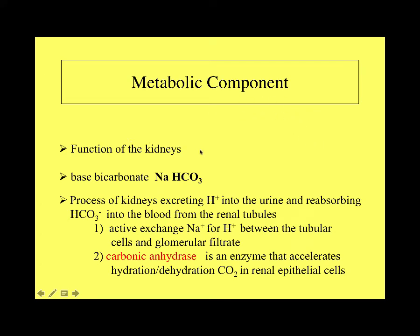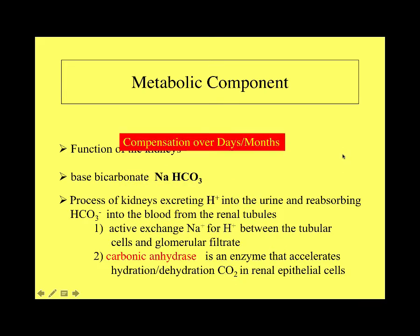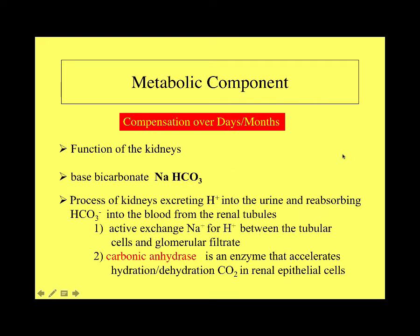The metabolic component is managed by the kidneys via base bicarbonate (NaHCO3). The kidneys exchange sodium and hydrogen ions between tubular cells and the glomerular filtrate to control the metabolic component. This compensation is much slower — occurring over days to months — but is a very important long-term compensatory mechanism.